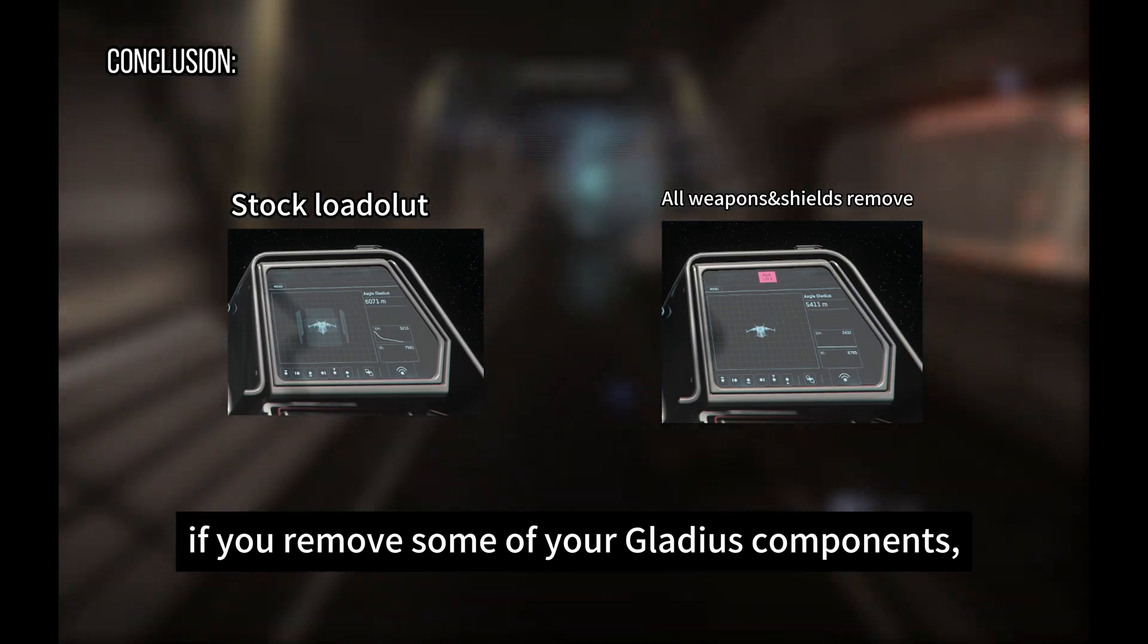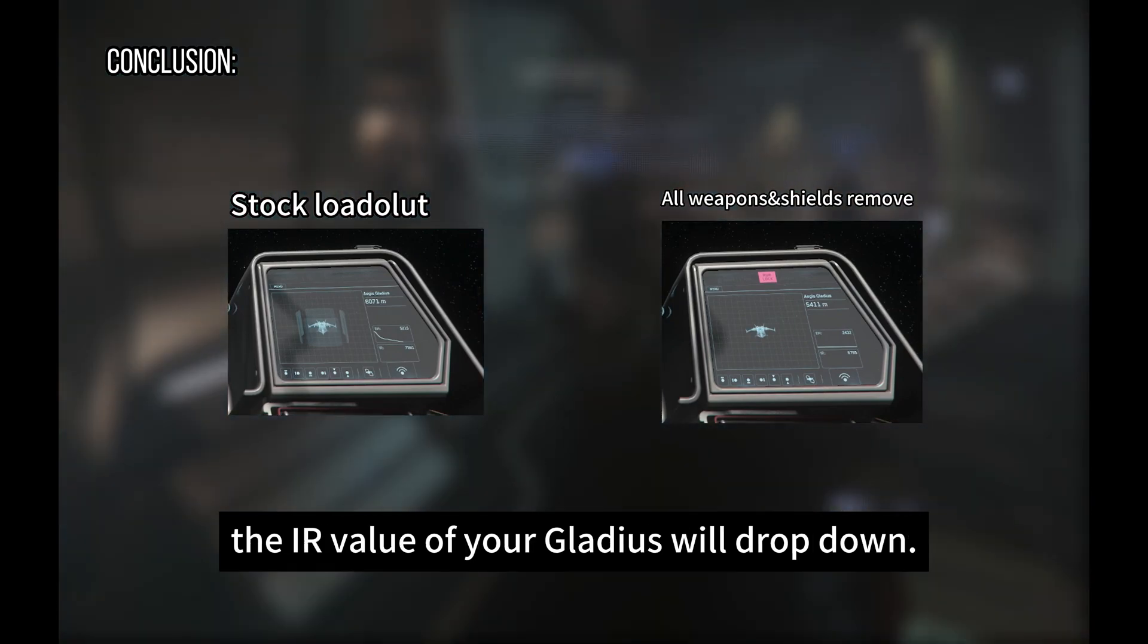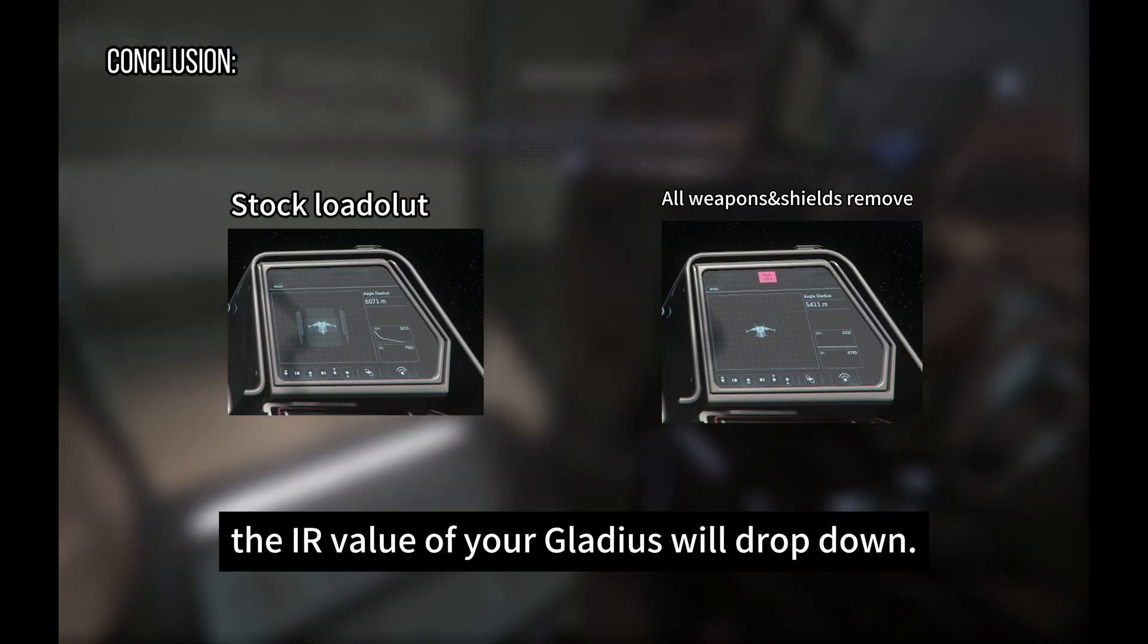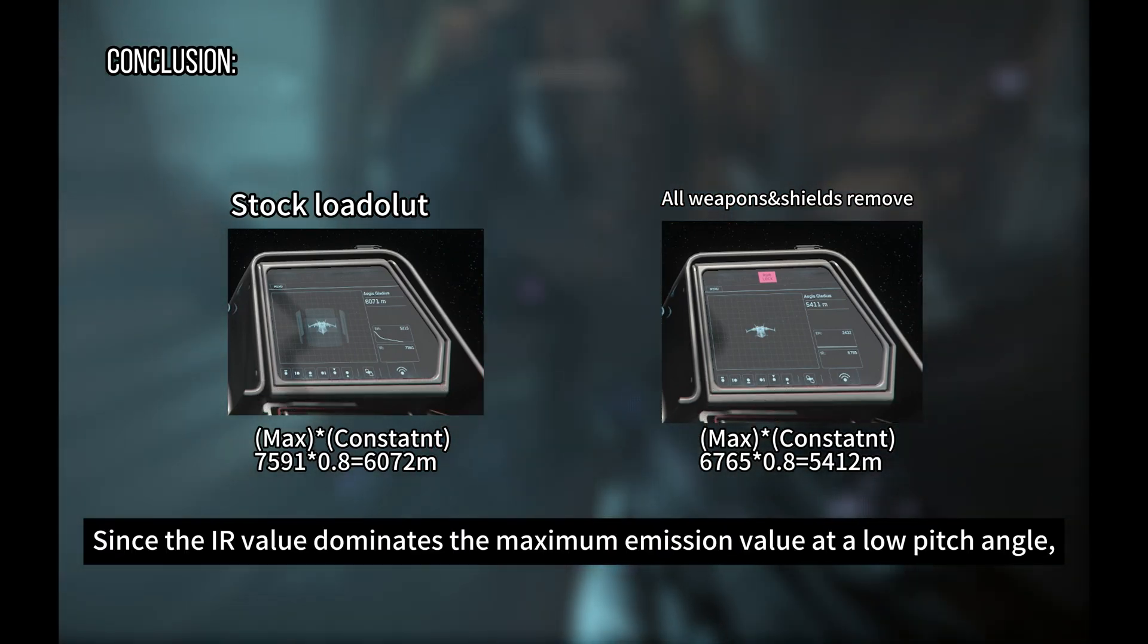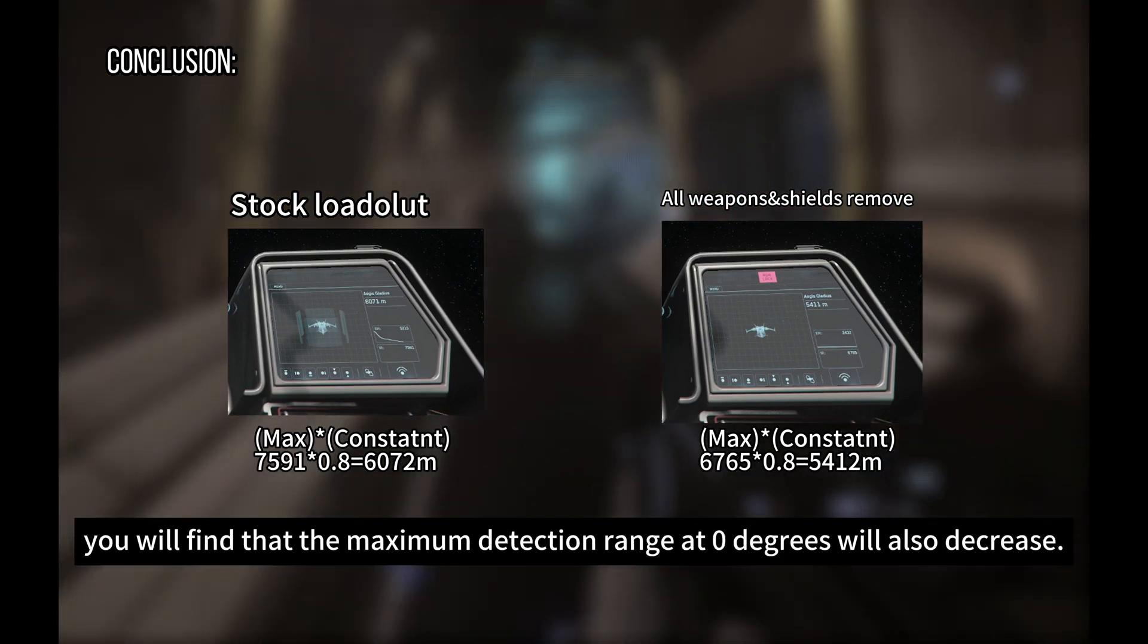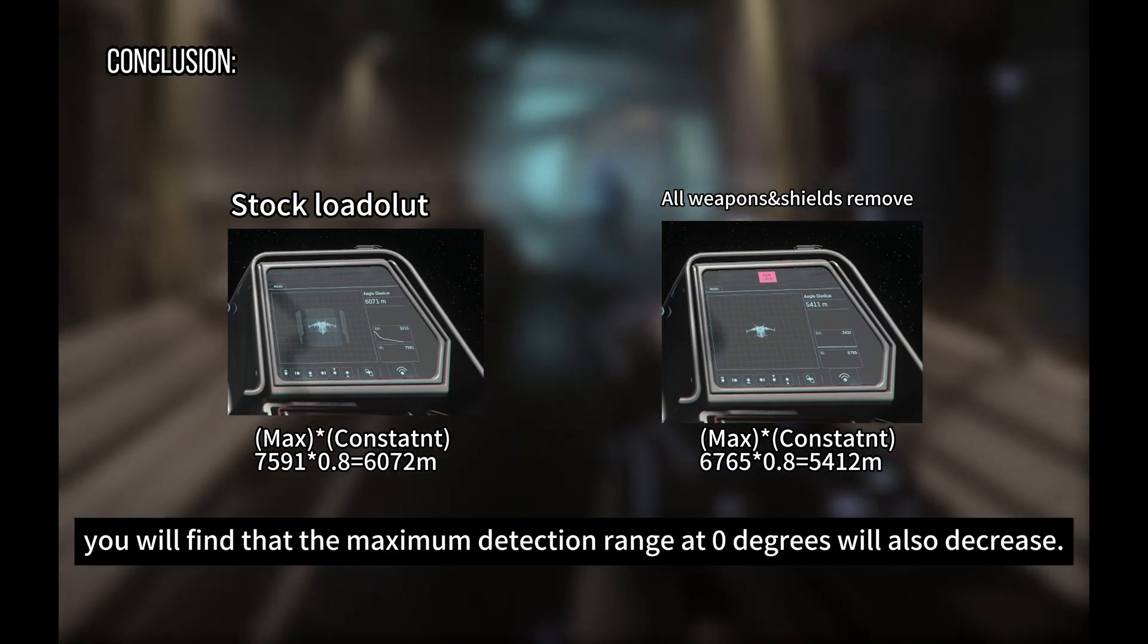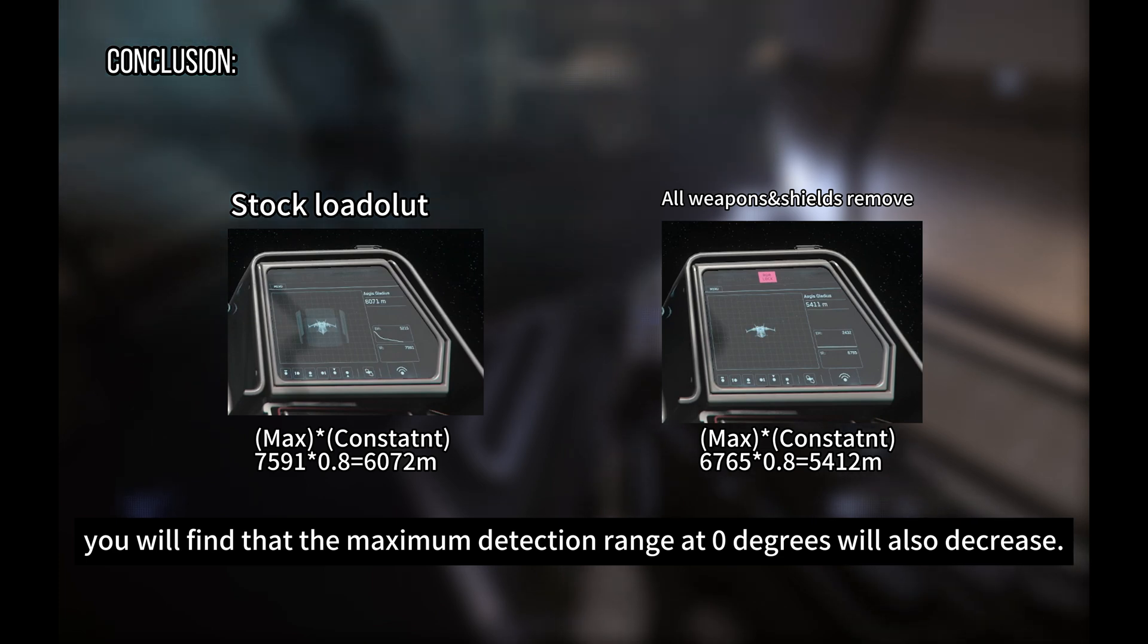Let's take another example. If you remove some of your Gladius components, the IR value of your Gladius would drop down. Since the IR value dominates the maximum emission value at a low pitch angle, you will find that the maximum detection range at 0 degrees will also decrease.